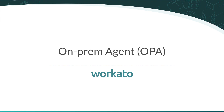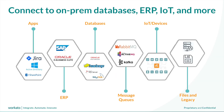It's common for customers to create integrations with Recato that connect to on-premise apps like databases, ERP systems, file servers, IoT, message queues, and other legacy systems that sit behind corporate firewalls. These on-premise systems can be running on your own data centers or on a private cloud using Azure, AWS, or GCP.